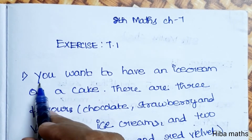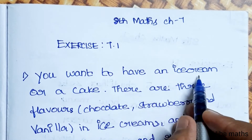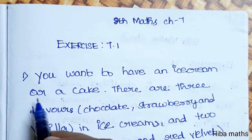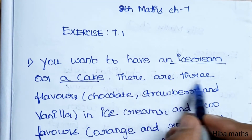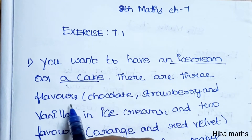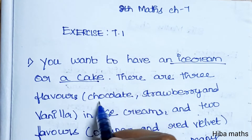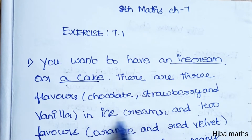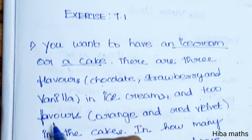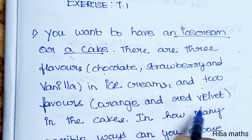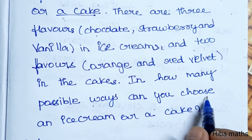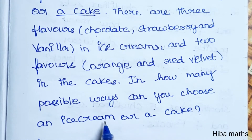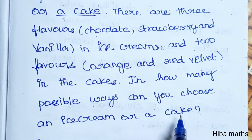The first question is: you want to have an ice cream or a cake? Ice cream, not a cake. There are 3 flavours of ice cream — chocolate, strawberry, and vanilla — and 2 flavours in the cakes — orange and red velvet. In how many possible ways can you choose an ice cream or a cake?